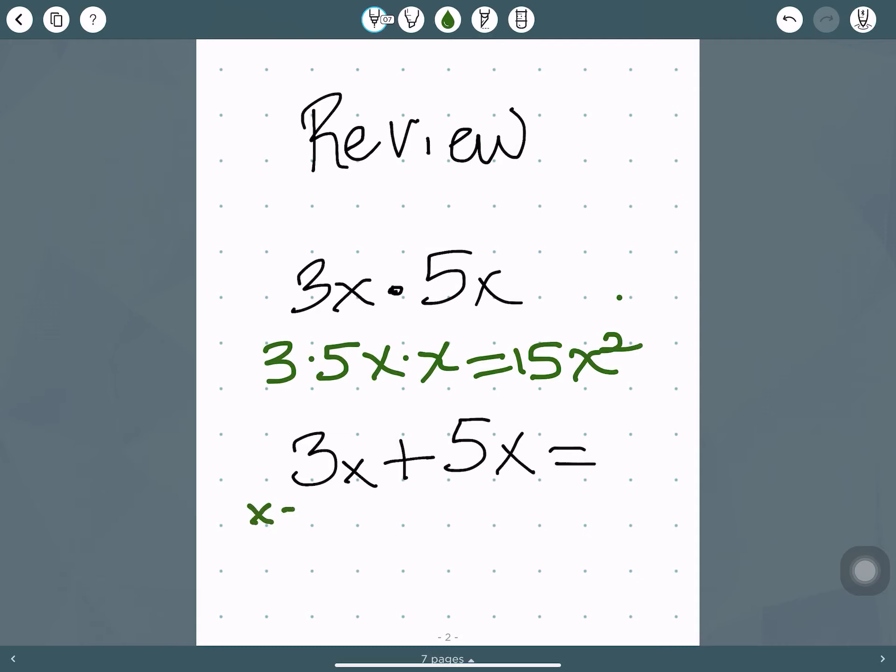But when we're adding, that's the same thing as x plus x plus x plus five more x's added together. So that is 8x altogether. You're going to need to know that in order to multiply polynomials together.